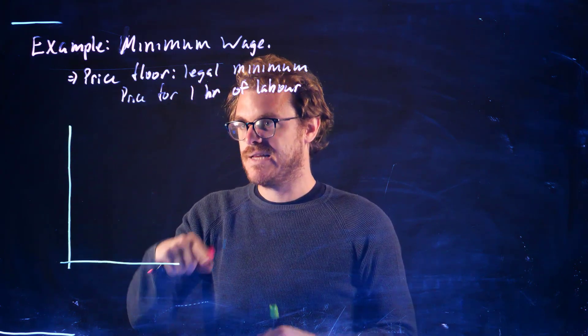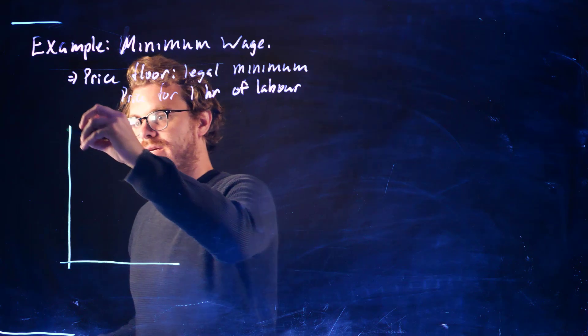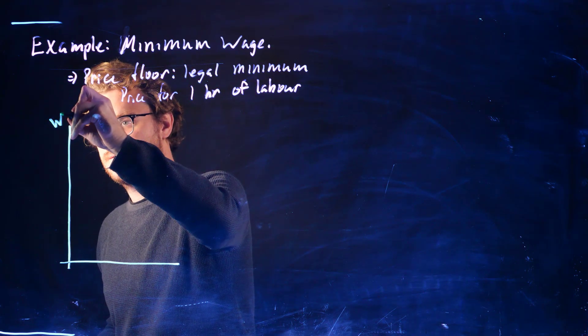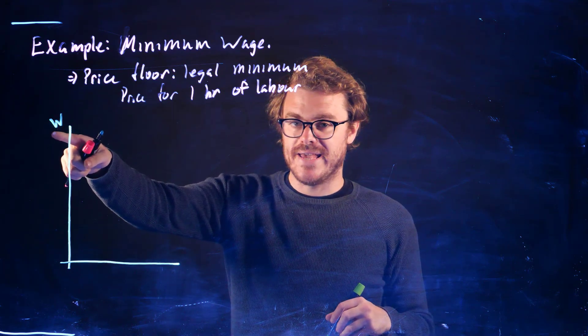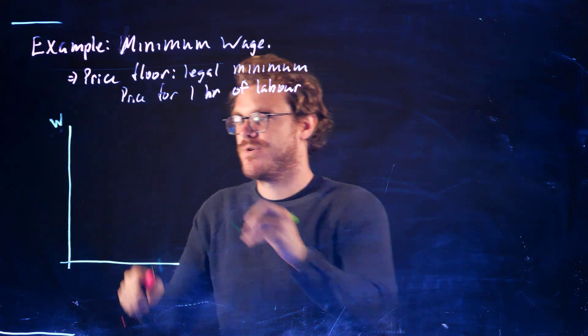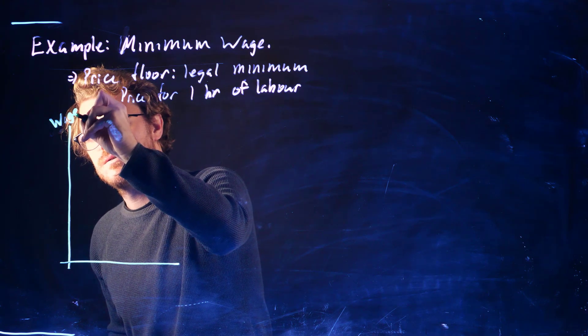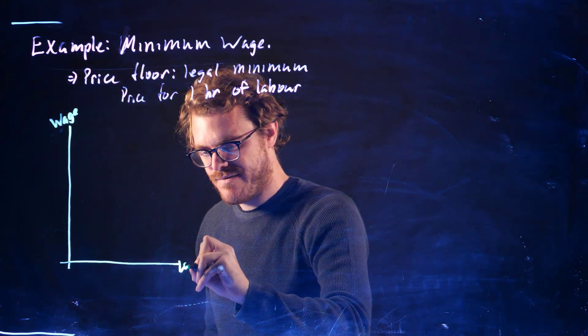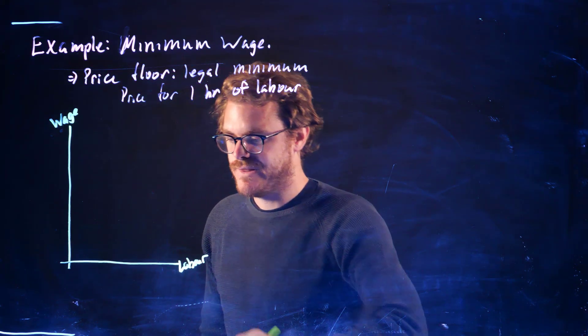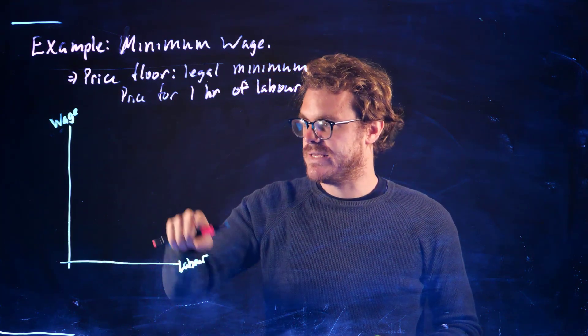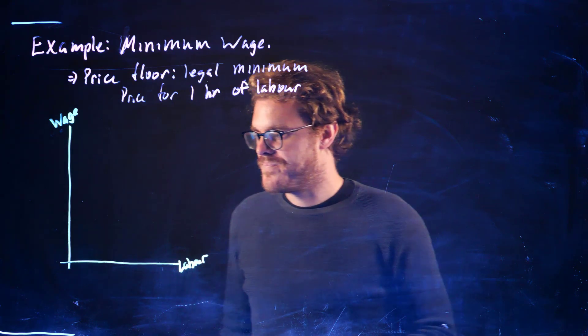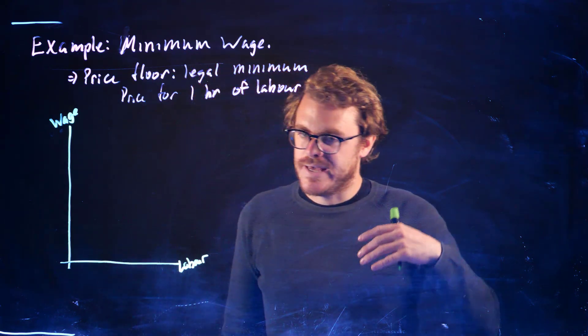The price of labor is going to be wage, so W for wage, or I'll just write wage in here. And we have the amount of labor on our x-axis. So just labeling the axes a little bit differently.